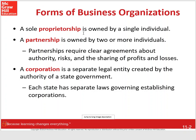A sole proprietorship is a business owned by a single individual — meaning by one individual. However, in community property states it could be by a couple that is married, so potentially two people could be running a sole proprietorship.